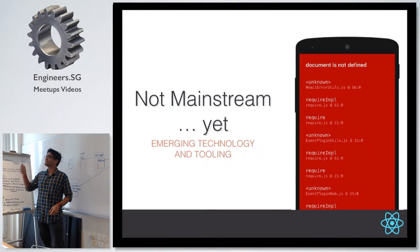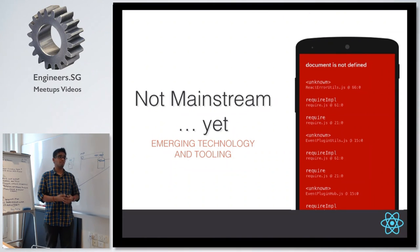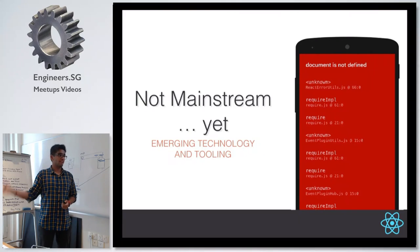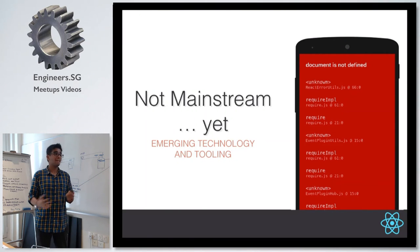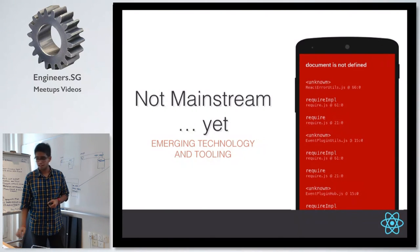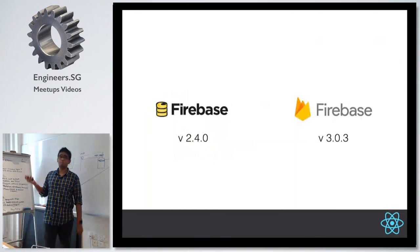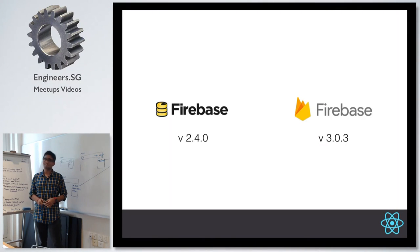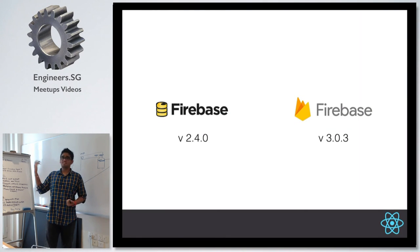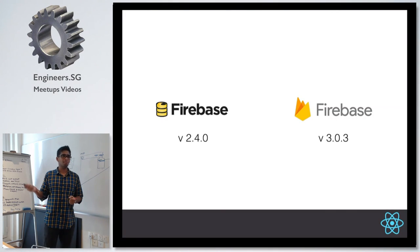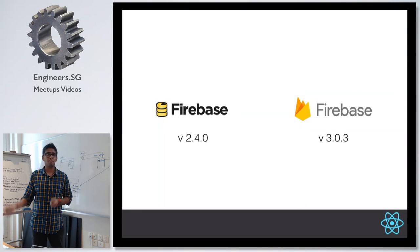There's also a problem with NPM packages: so many packages assume you're running in a browser or in a Node environment. When a new version of a library stops supporting React Native, you get weird errors. We faced this with Firebase when it went from version 2.4 to 3.0 — they included cloud messaging, analytics, and other features that required a browser to be present, which basically broke support for React Native. These things happen because React Native isn't yet mainstream, and when people make big changes to well-established libraries they don't consider React Native as a platform to support.